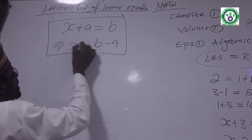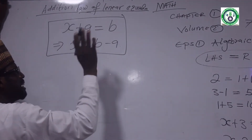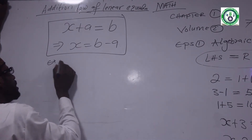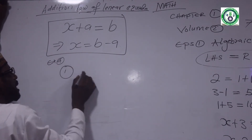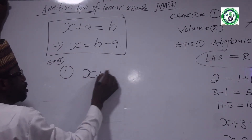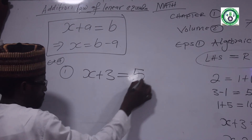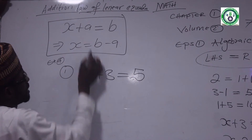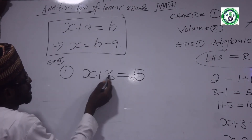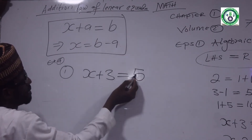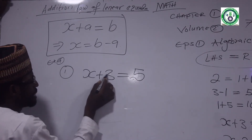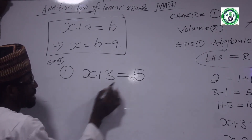Let's see example A, number one: x plus 3 equal to 5. What is the number? X is on one side, plus 3 is also there, equal to 5. A certain unknown number — when I add 3, I get 5.